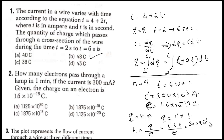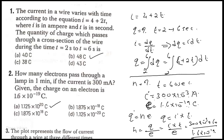Solving this, we get n = 1.125 × 10²⁰. So the final answer is 1.125 × 10²⁰ electrons. Write down all the given data clearly and you can easily find the answer.